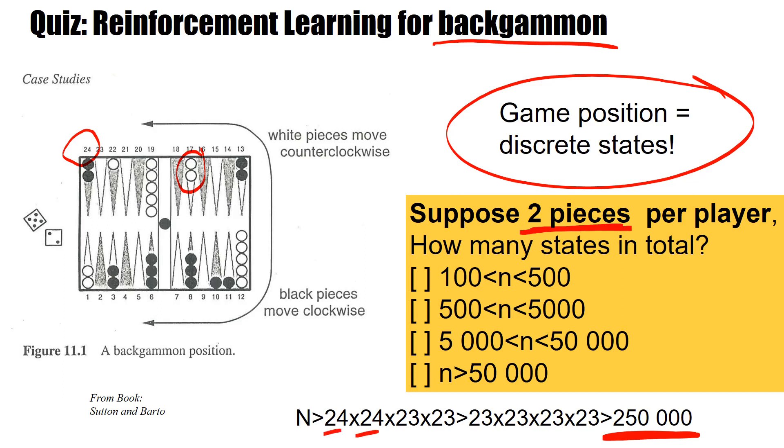The first player can put the two pieces each on one of the 24 positions. The second player can also put it on 24 except if there's a protected group, in which case there's only 23 possibilities.